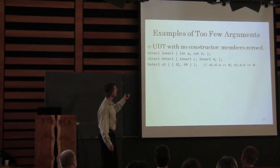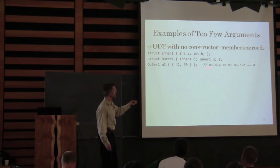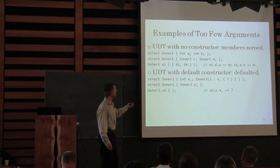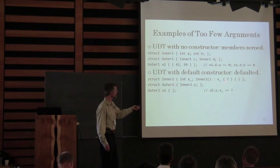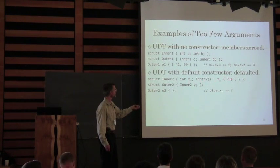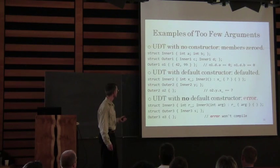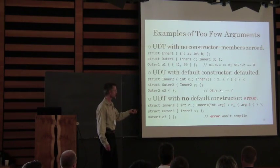Here's a struct — an aggregate that contains a struct which is also an aggregate — and the things in there are going to get zeroed. A user-defined type with a default constructor: here's our default constructor, and we're going to initialize member x with seven. We call the empty braces and that default constructor gets called. A user-defined type with no default constructor, where a constructor requires an argument — in that case, we will not compile.